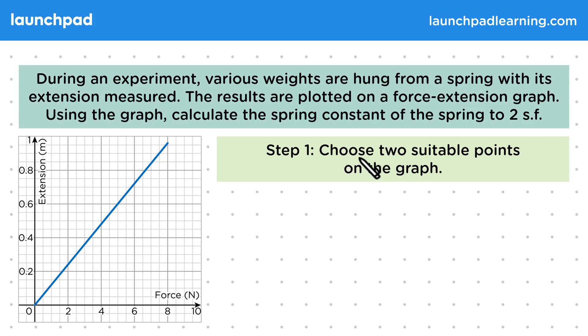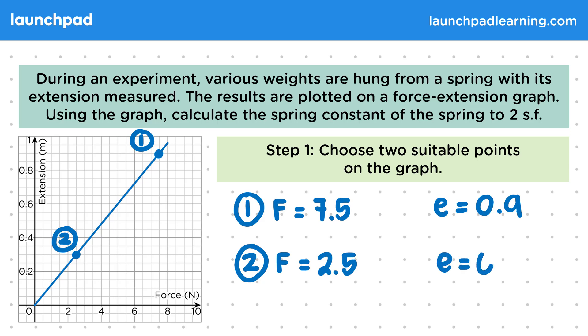So for step one, let's choose two suitable points on the graph. For the first point, the force is equal to 7.5 newtons and the extension is 0.9 metres. For the second point, the force is equal to 2.5 newtons and the extension 0.3 metres. Now these points are good, sensible choices as they are easy to read and they're far apart.